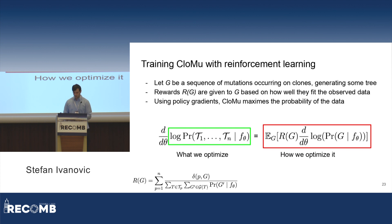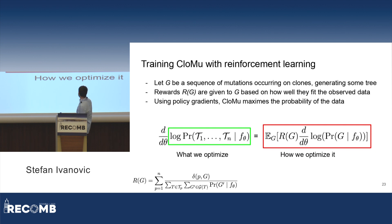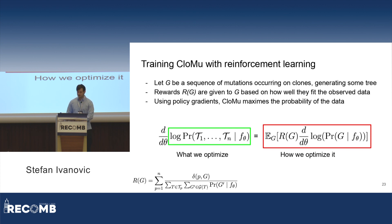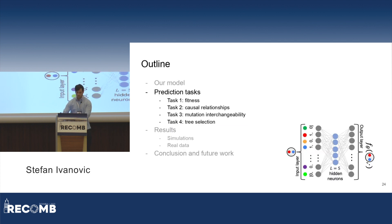We derive an equation where, as circled in green on the left, we have what we want to optimize — to maximize the probability of the data given the model. We derive that we can do this by using policy gradients and a specific expression. In that expression, we take the expectation value over generative sequences by sampling from our model. Each generative sequence is, in reinforcement learning terms, a sequence of actions taken by the model to generate a tree. We then increase the probability of generative sequences that have high rewards.